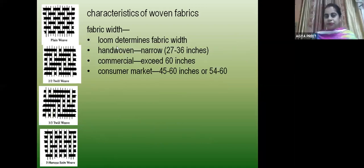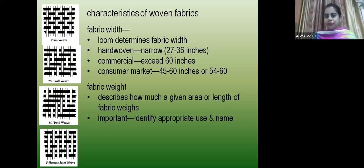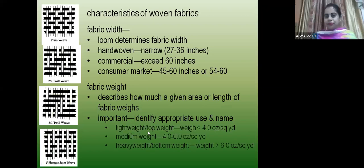Fabric width is determined on the loom. Hand-woven fabric width is narrow — 27 to 36 inches. For commercial fabric it is more than 60 inches. We use a GSM cutter to weigh fabric and define it in grams per square meter. Light weight fabric is less than 4 oz per square yard, medium weight is between 4 to 6, and heavy weight is more than 6 oz per square yard.